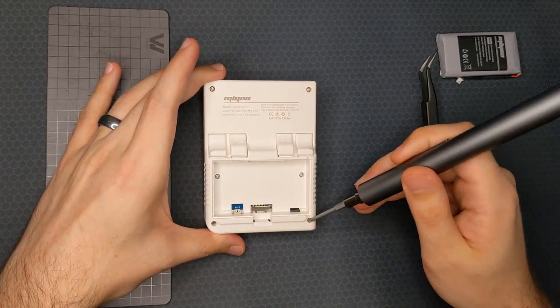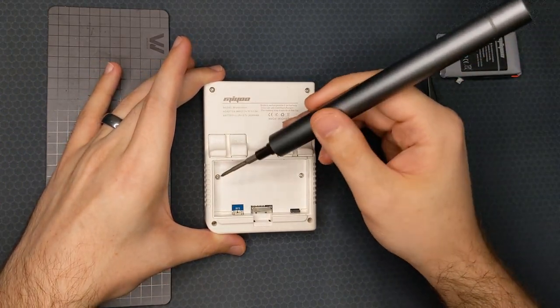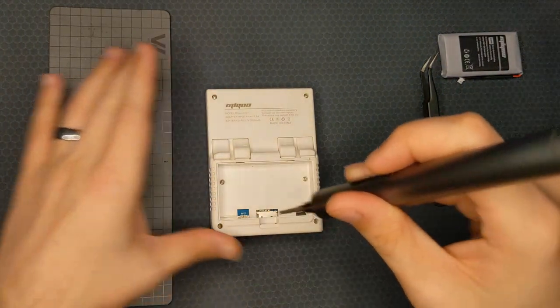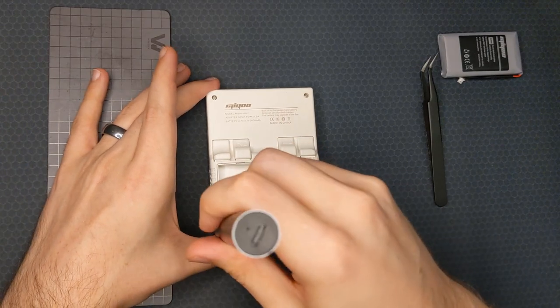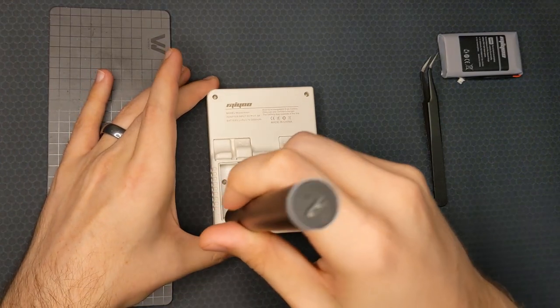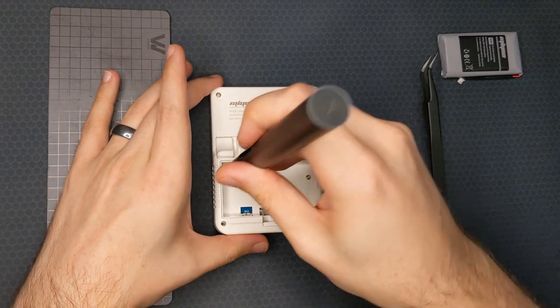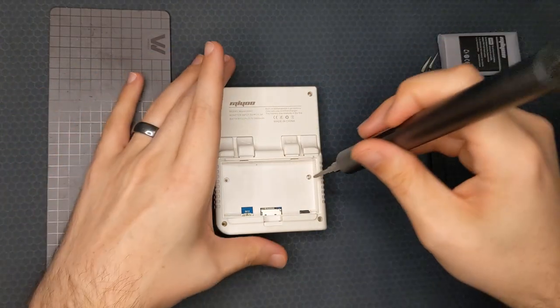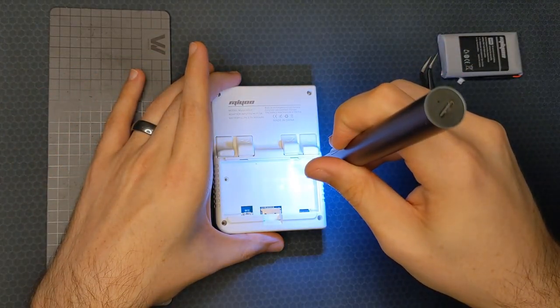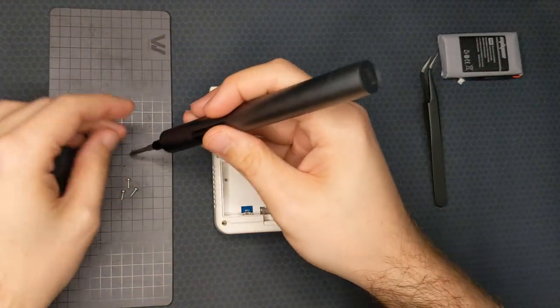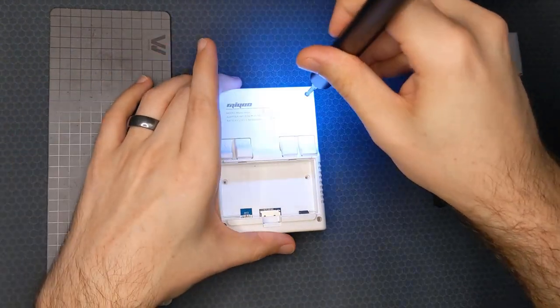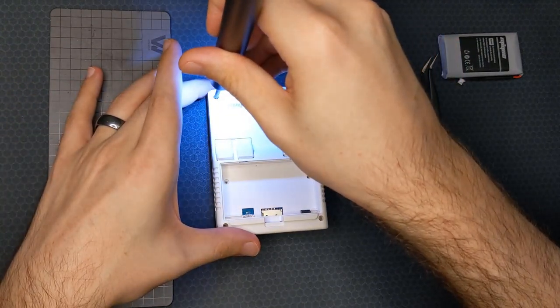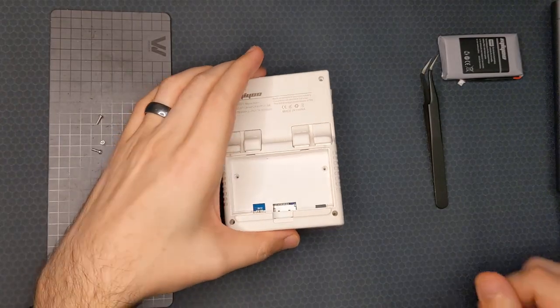The next thing we want to do is remove these six screws, two on each side here.